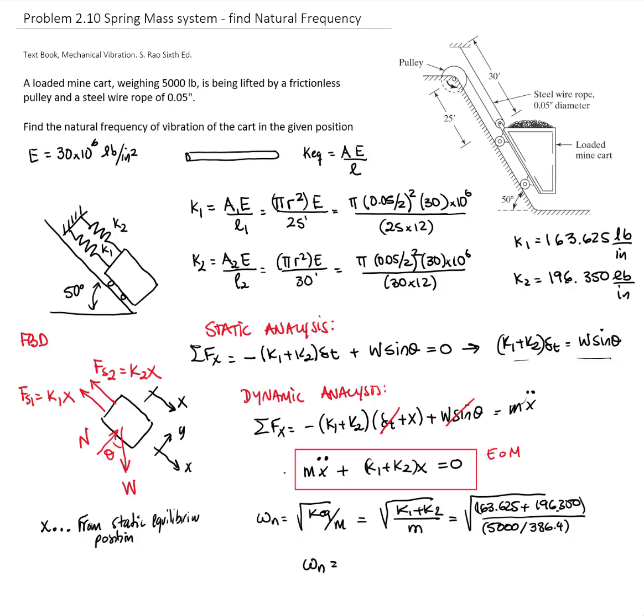Finally, we get that the natural frequency of the system is 5.27 radians per second. This is the natural frequency of the system.